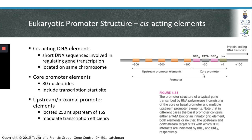In addition to the core promoter required for binding of RNA polymerase 2, there are also upstream proximal promoter elements located approximately 250 nucleotides upstream of the transcription start site. These upstream promoter elements can modulate the efficiency or rate of transcription. Whether genes are transcribed at a low or high level depends on the factors that bind to these upstream promoter elements.